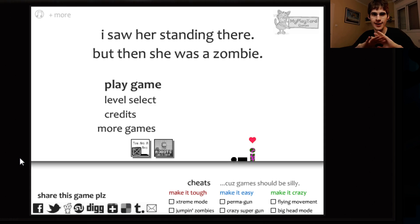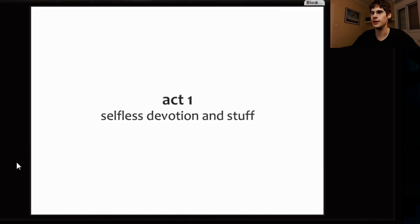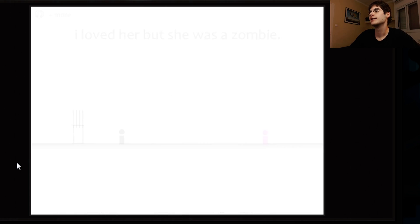Everything has already been done about zombies. However, this is kind of unique because your character's in love with a zombie girl and you don't want to kill her. You just want to, I don't even know. So let's find out together. Play game, starting out from the get-go. Act one, selfless devotion and stuff. I loved her, but she was a zombie.